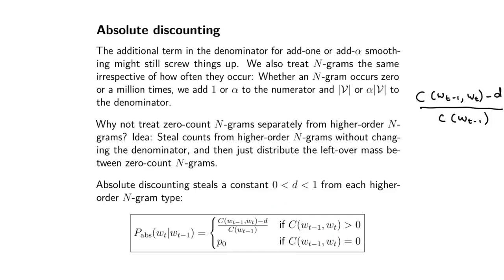But you can make D a function of how often this specific bigram occurs. Intuitively, maybe we want to steal more from something that occurs a million times than from something that occurs five times.